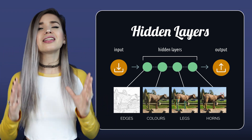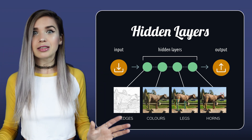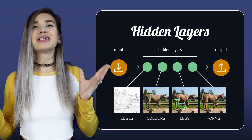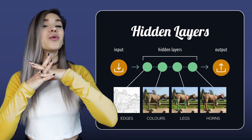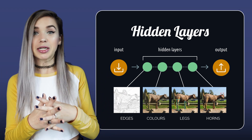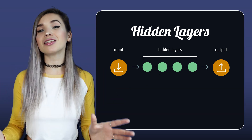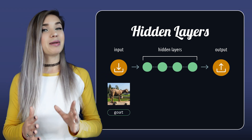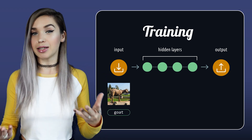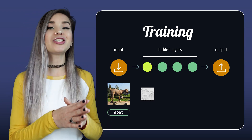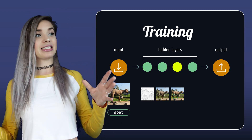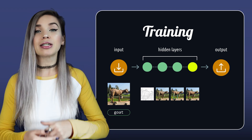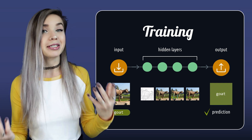Now, on their own, these layers are quite useless. Just because something has horns doesn't really make it a goat. But when we combine all these layers together, we actually have enough information to make a prediction. So an image is loaded into the input layer along with its label — this is where we begin training our neural network. The image will then pass through each of our hidden layers one at a time, and once we reach the output layer, our network will return a class name, which we call a prediction.